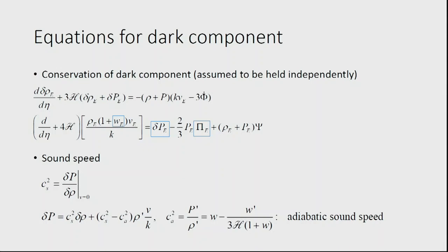For the new component E, you need equations: density perturbations and the Euler equation for velocity. But this new component has four new quantities — density perturbations, pressure perturbations, anisotropic stress, and velocity — with only two equations. Similar to the background, you must specify the equation of state. Likewise, you must specify pressure perturbations and anisotropic stress, which you cannot derive from conservation equations alone.